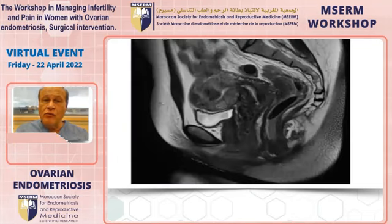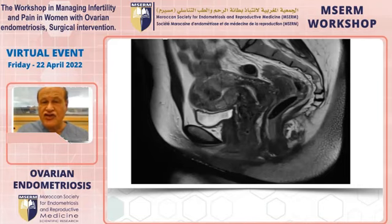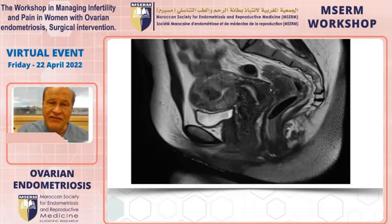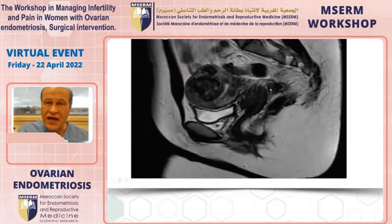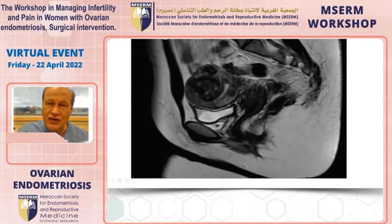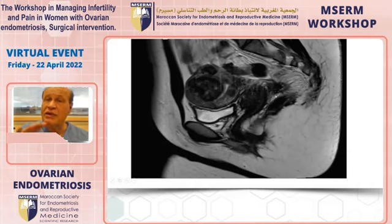Moving on to deeply infiltrating endometriosis, MRI shows a lesion between the rectum and the back of the cervix attached to the peritoneum. The lesion is clearly visible with fat infiltration, but the rectovaginal septum is completely normal, meaning the surgeon can get underneath it.